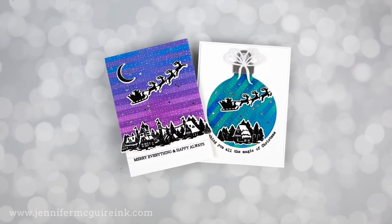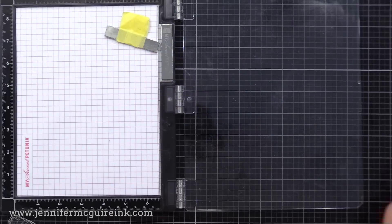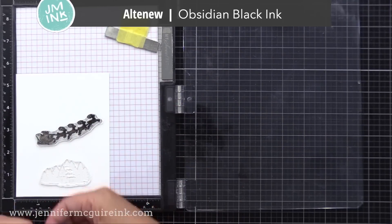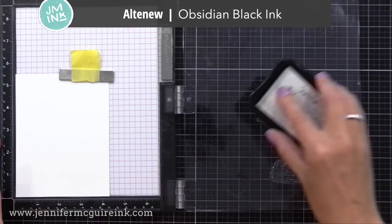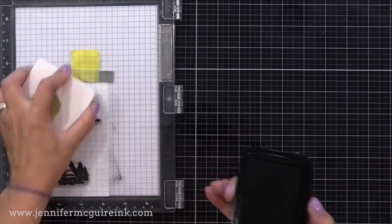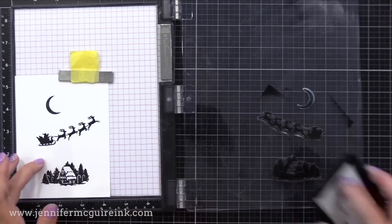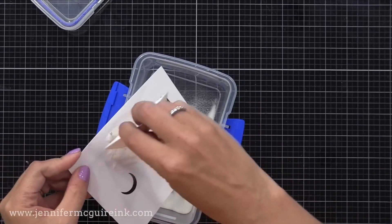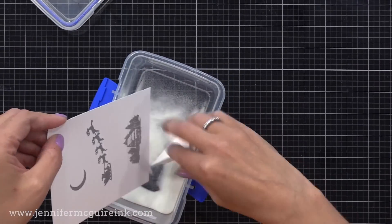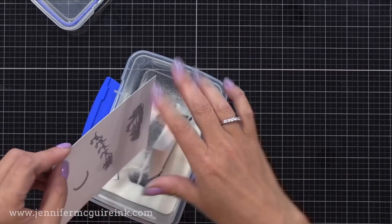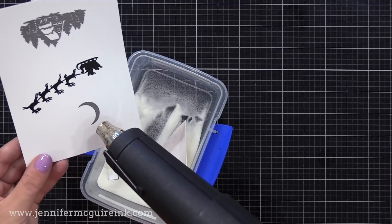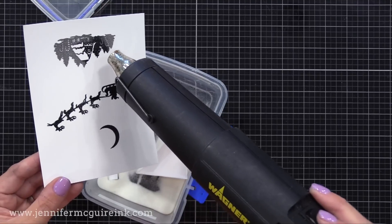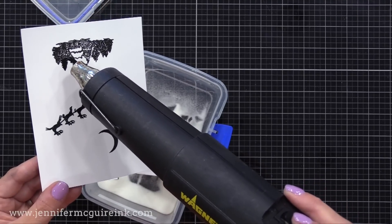Now we can get started by stamping our silhouette images for both of our cards. I have my MISTI stamping tool and a few of the images. I just have white card stock in my stamping tool, and I'm inking up my stamp with Altenew Obsidian Black Ink, which is a pigment ink, because I plan to heat emboss this. So after I've stamped it a couple times, I will sprinkle on some Hero Arts clear embossing powder and heat set it.